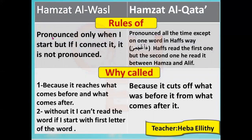Rules of Hamzat al-Wasl: it is pronounced only when I start; if I connect, it is not pronounced. Rules of Hamzat al-Qata: it is pronounced all the time — except in one word in Hafs' way. And why I say Hafs' way? Because each Qari — Hafs, Warsh, Hamza, Ya'qub, Abu Amr — each one who gives us a Riwaya has his own way to read the Hamza. So in Hafs' way, we pronounce Hamzat al-Qata all the time.